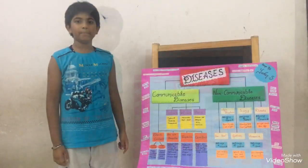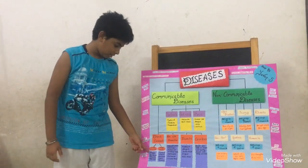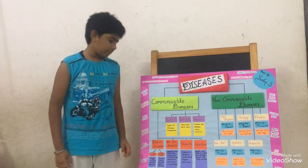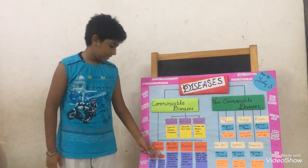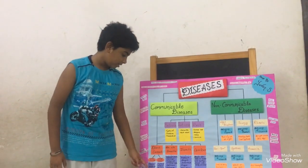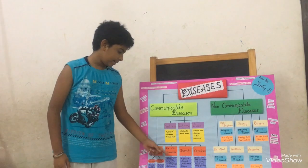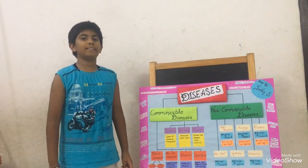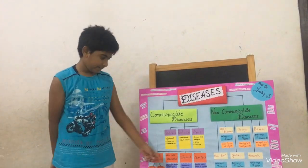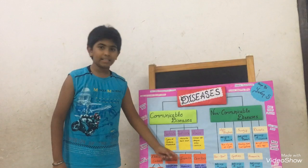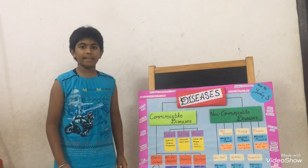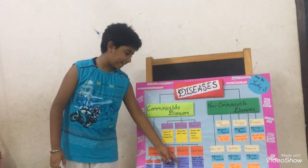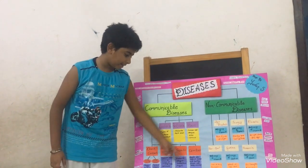Cough and sneeze — the example is common cold, chicken pox. Food and water — the examples are typhoid, cholera. Airborne, from infected person sneezing. Insects, especially mosquitoes — malaria, dengue — carriers.